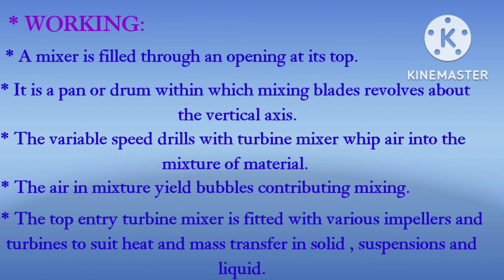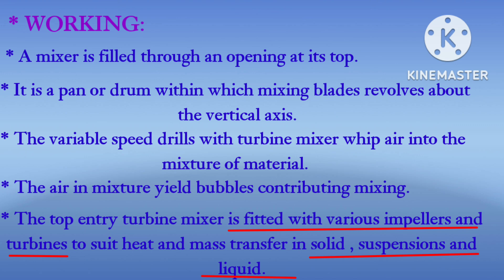Working of the turbine mixer: the mixer is filled through an opening at its top. It operates as a pan or drum within which the mixing blades revolve about the vertical axis. The vertical speed draws air into the mixture of material, and this air adds bubbles contributing to the mixing. The turbine mixer is fitted with various impellers and turbines to aid heat and mass transfer in solids. Suspension of solids in liquids also takes place. The high shear causes uniform emulsification and homogenization of the products.